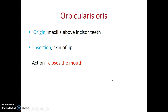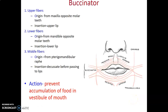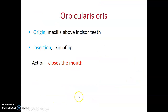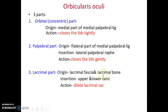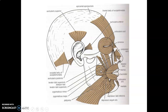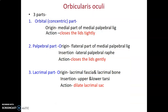Orbicularis oris is a circumferential muscle around the mouth, originating from the maxilla above the incisor teeth and inserting on the skin of the lip — it helps with closing of the mouth. The buccinator muscle has upper fibers from the maxilla, lower fibers from the mandible, and middle fibers from the pterygomandibular raphe. Its main action is to prevent food from accumulating in the vestibule — the part of the oral cavity external to the teeth.